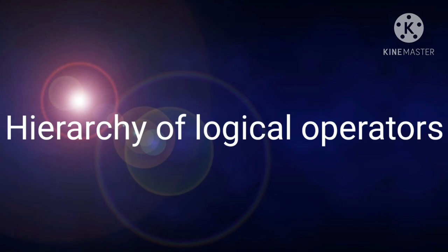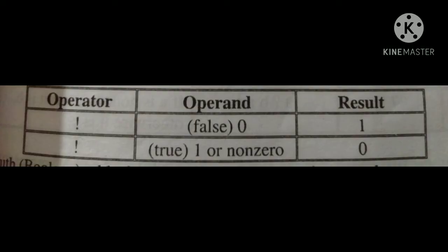Truth table for the negation operator takes only one operand. The table has three columns: operator, operand, and result. Negation of operand 0 gives result 1. Negation of operand 1 (non-zero) gives result 0.